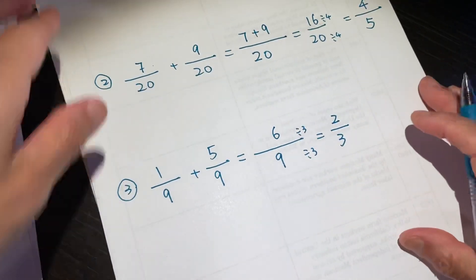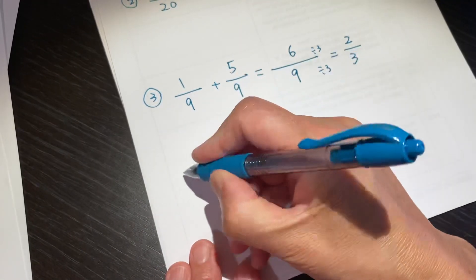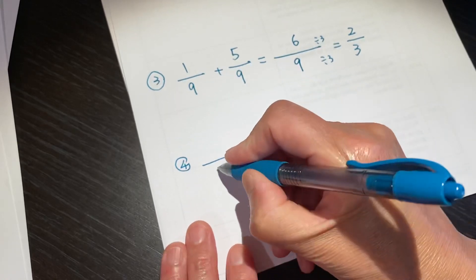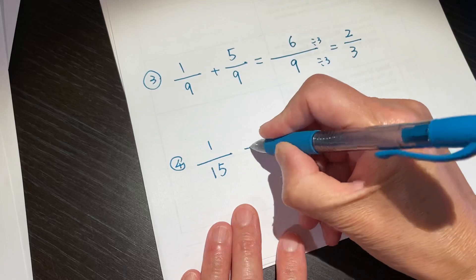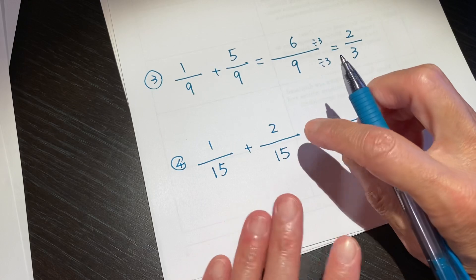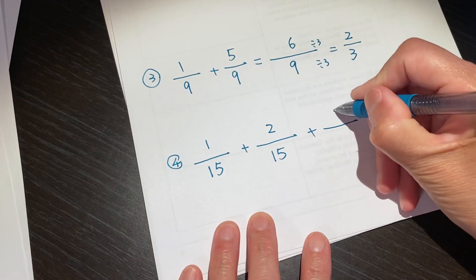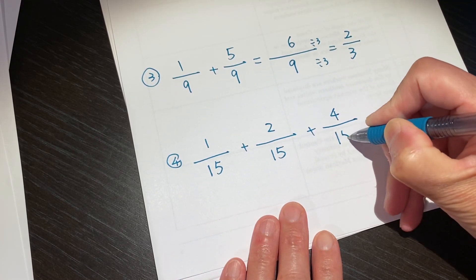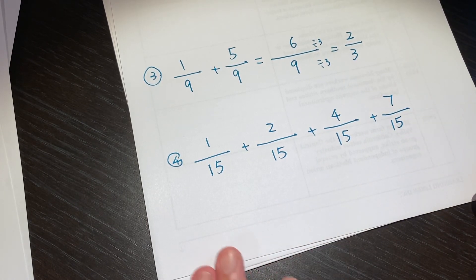How about we make another exercise with more than two numbers. Question number 4. 1 over 15 plus 2 over 15 plus 4 over 15 plus 7 over 15. See what we can get.